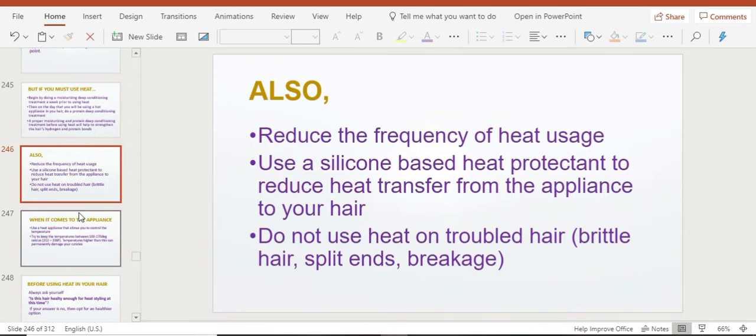Another thing you want to do is reduce the frequency of heat usage. You can use heat maybe just once a month or once every two months. Every time you use heat in your hair, you want to use a silicone-based heat protectant. This is where it's okay to use cones in your hair. Silicones work great because they provide a protective barrier to your hair shaft, especially your hair cuticles.